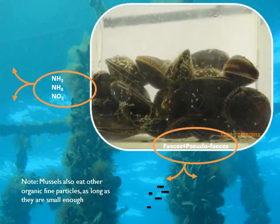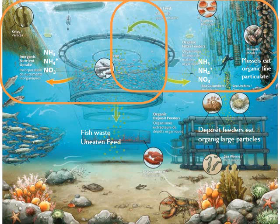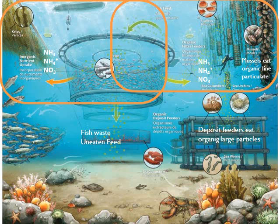Let's look at the deposit feeders. The deposit feeders use organic particle nutrients — the uneaten feed and waste, as well as decayed matter — for nourishment. I'll provide a link to BBC One's Frozen Planet, which is an amazing series with an amazing time-lapse image showing this.